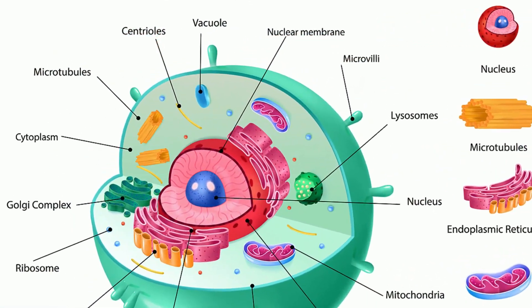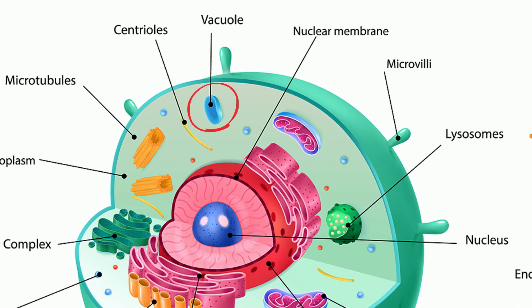Vacuoles are organelles that store materials like water and other materials. Lysosomes, which are created at the Golgi apparatus, contain enzymes that help break down waste materials and digest materials in the cell like bacteria.